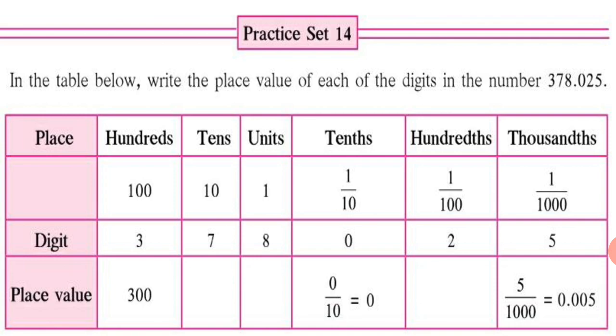Now, let's place the digits. Digit 3, 7, 8, 10s place 0, 100s, 2 and 1000s, 5. Now, we are supposed to write the place value. So, let's see. Some sums are already done for you. We have to fill in the blanks.